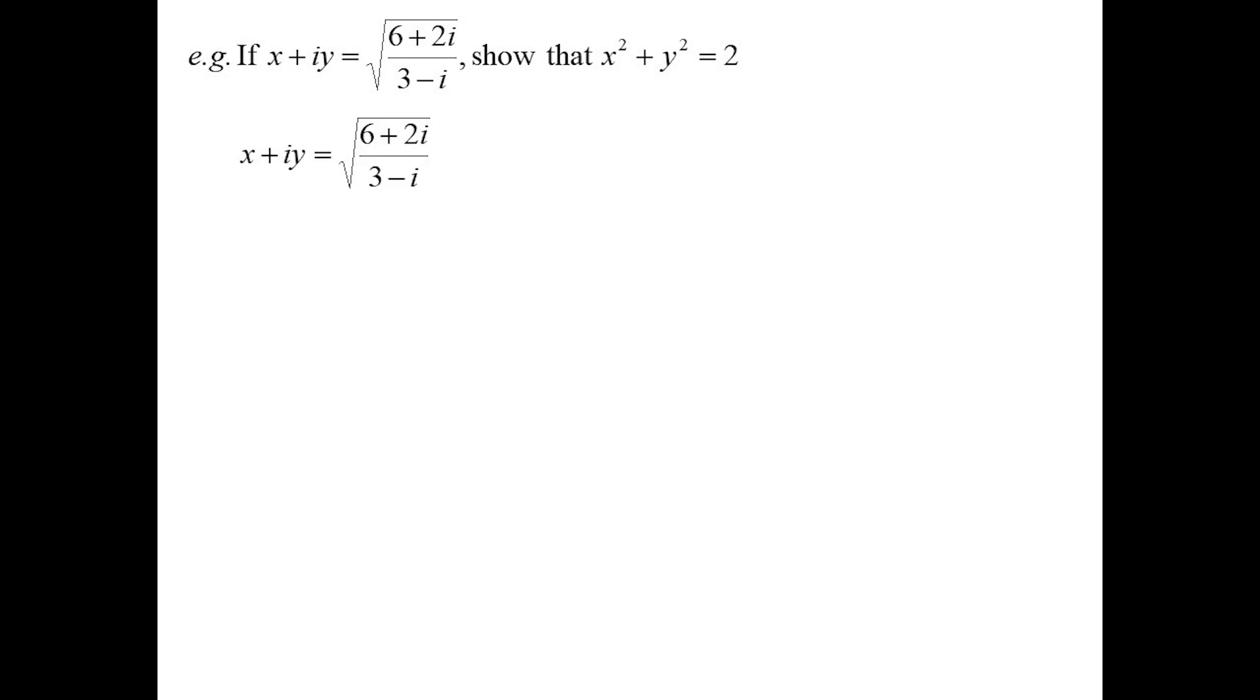So we're told that x plus iy is the square root of 6 plus 2i over 3 minus i. We're going to show that x squared plus y squared is 2. So x plus iy equals square root of 6 plus 2i over 3 minus i. If I was to square that, obviously I'll get rid of the square root symbol.